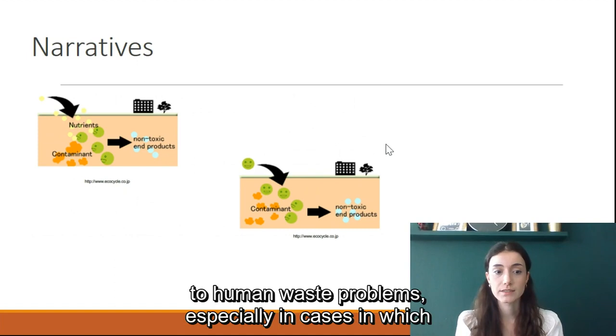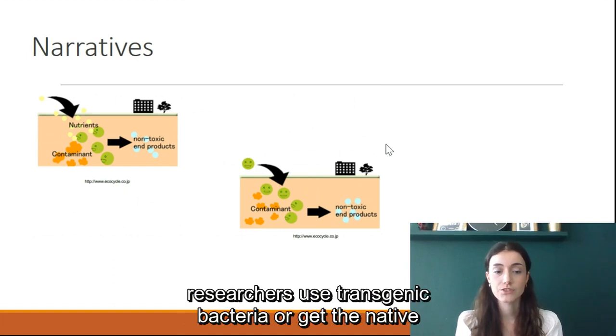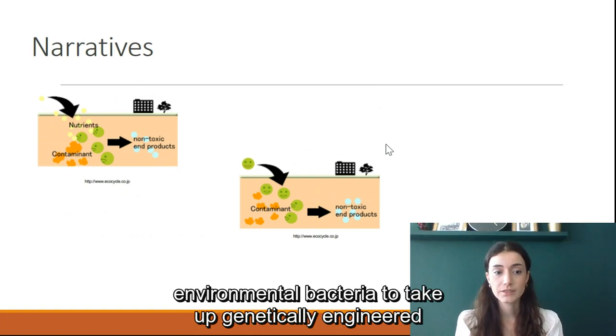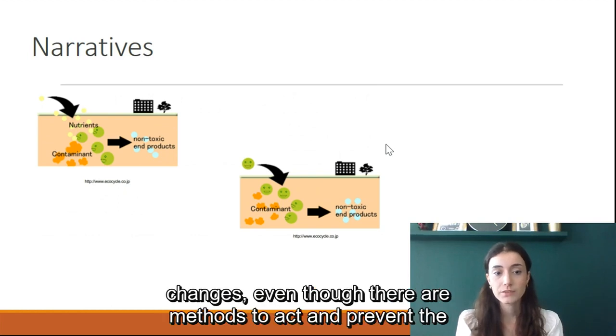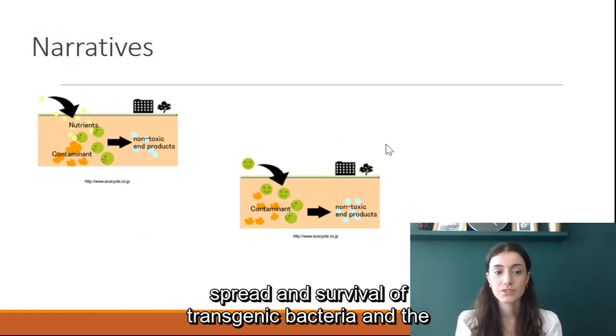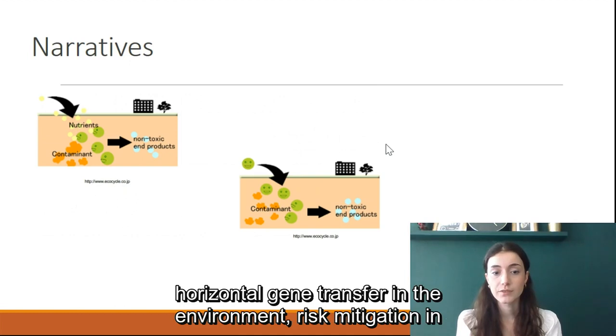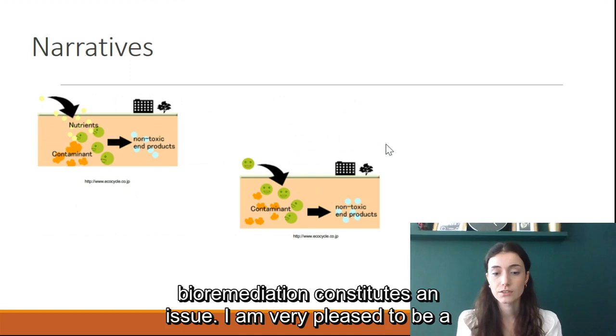Especially in cases in which researchers use transgenic bacteria or get the native environmental bacteria to take up genetically engineered plasmids, microbial communities sometimes go through permanent changes. Even though there are methods to prevent the spread and survival of transgenic bacteria and the horizontal gene transfer in the environment, risk mitigation in bioremediation constitutes an issue.